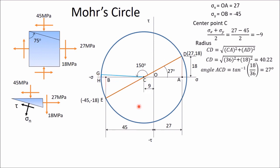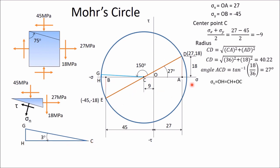Using the right-angle triangle with vertices C, H, and G: the angle ACD is 27 degrees and the arc from D to G spans 150 degrees, making the total 177 degrees. So the small angle HCG is 180 - 177 = 3 degrees. Normal stress sigma N equals OH = OC + CH = -9 + CG·cos(3°). Since CG equals the radius 40.22, this gives sigma N = 40.22·cos(3°) - 9 ≈ 49.16 MPa. But since this is in the negative direction, sigma N = -49.16 MPa (compressive).